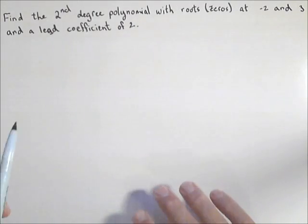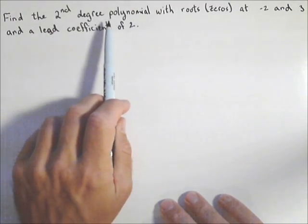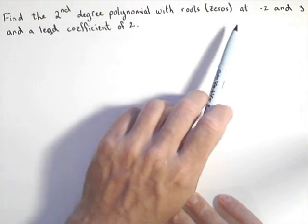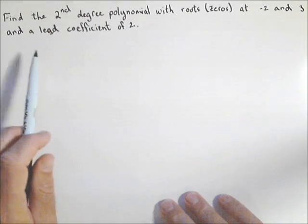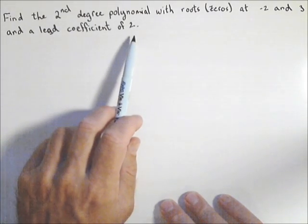This is going to be a quick video about how we can find a second-degree polynomial with roots or zeros at negative two and three and a lead coefficient of two.